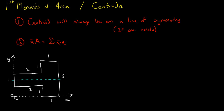The other main tool we have is this formula here, which states that the coordinates of the centroid of the whole shape, times the area of the entire shape, is equal to the sum of the coordinates of the elemental centroids times the elemental areas.